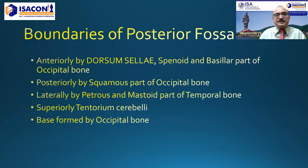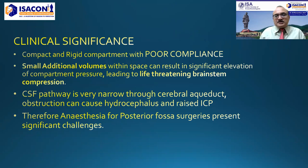The boundaries of the posterior fossa: anteriorly, it is bound by the dorsum sellae, sphenoid and basilar part of occipital bone; posteriorly, by the squamous part of occipital bone; laterally, by the petrous and mastoid part of temporal bone; superiorly, by the tentorium cerebelli; and the base is formed by the occipital bone. Clinically, the posterior fossa is a compact and rigid compartment with poor compliance. A small addition in volume, such as hemorrhage or a space-occupying lesion, can result in significant elevation of compartment pressure, leading to life-threatening brainstem compression.